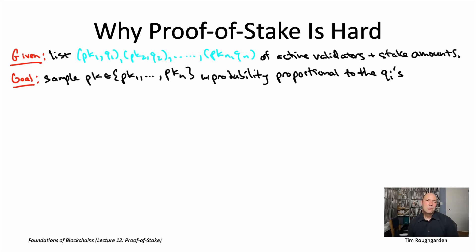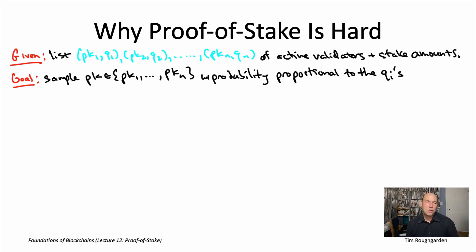With sampling proportional to stake, it becomes quite clear what kind of assumptions we're going to need to make bounding the power of the adversary — it's going to be just on the fraction of the stake controlled by Byzantine nodes. For a BFT type consensus protocol, we'd assume less than a third of the overall stake is controlled by Byzantine nodes. For a longest chain protocol, the assumption would be less than half of the stake controlled by Byzantine nodes.